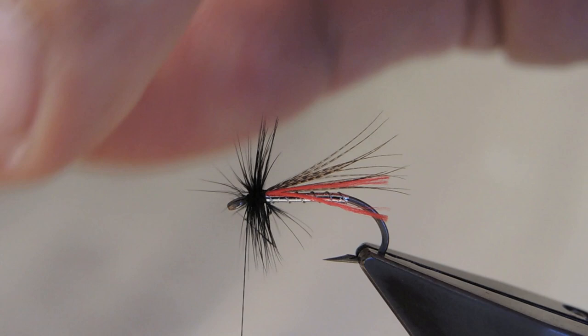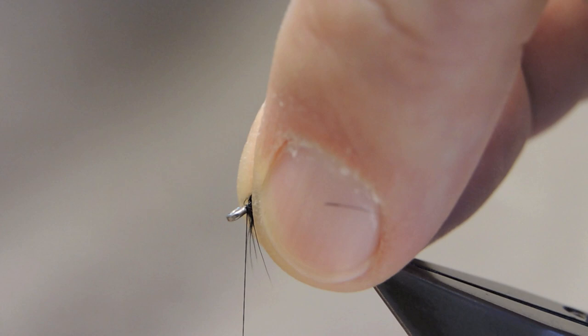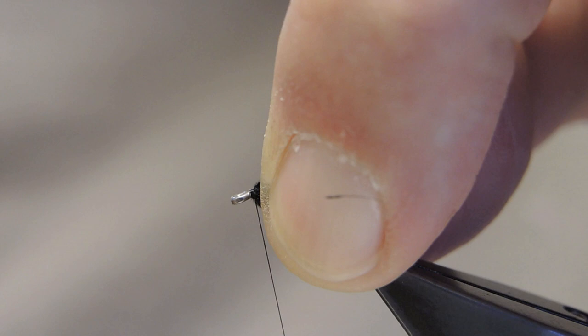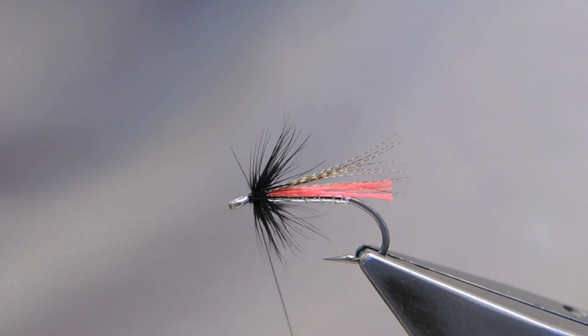Brush back the hackle and wrap a small, neat head, angling the hackle slightly back. Then finish off with a three turn whip finish.